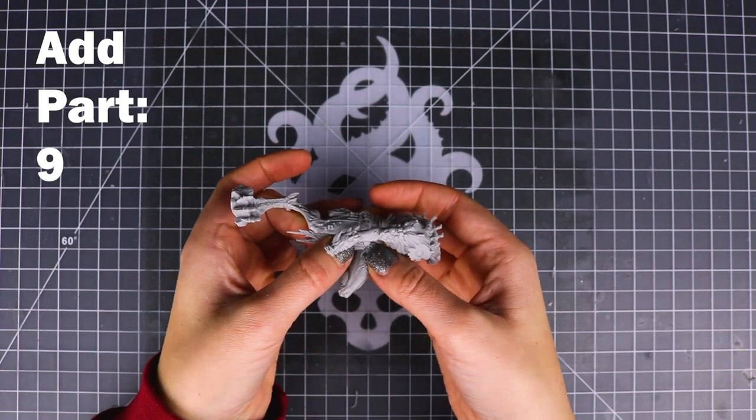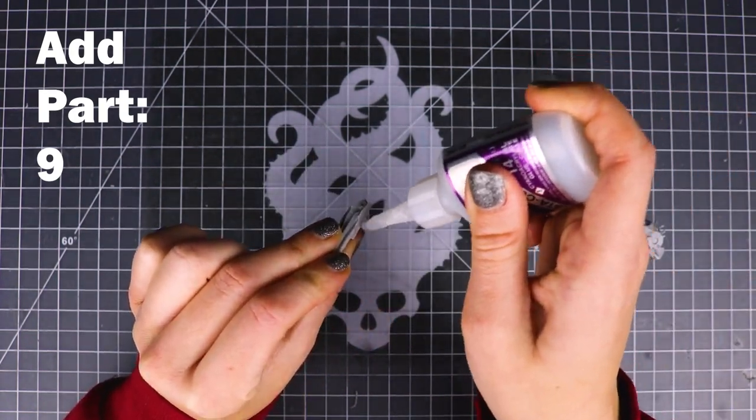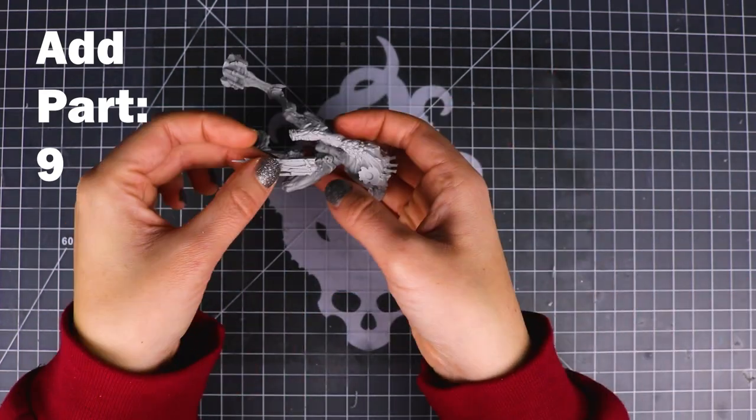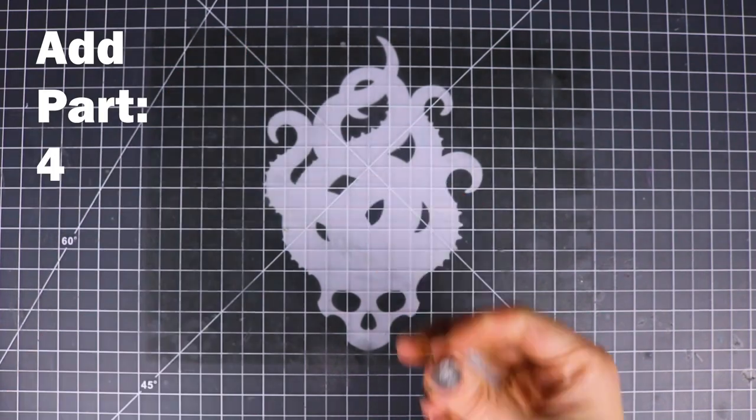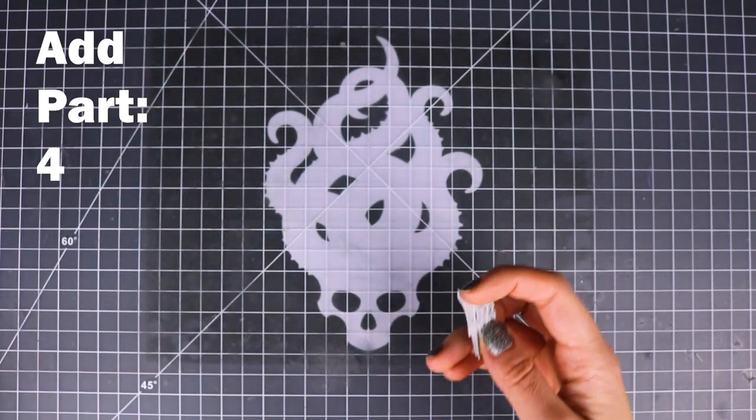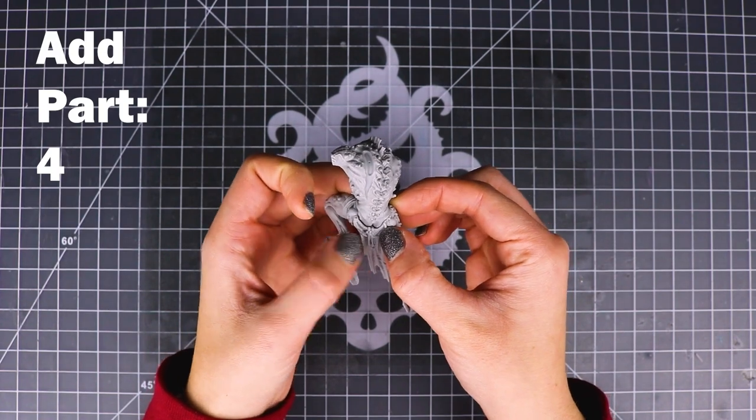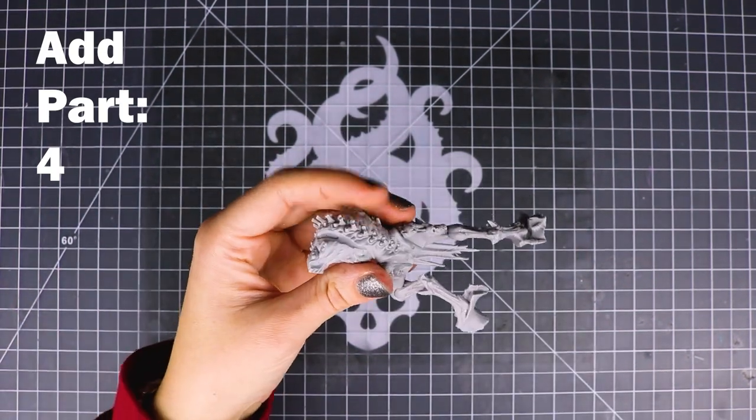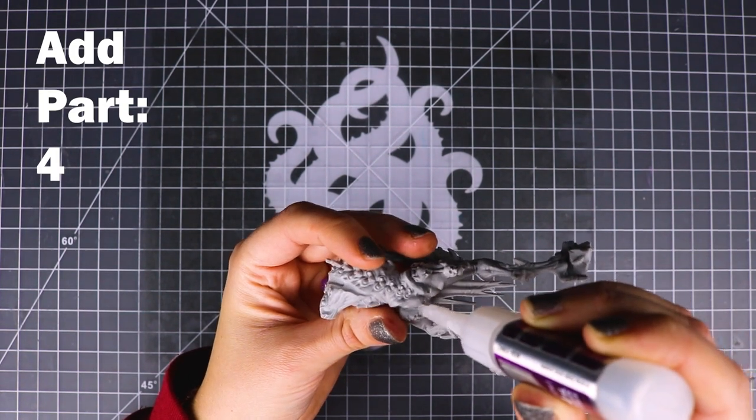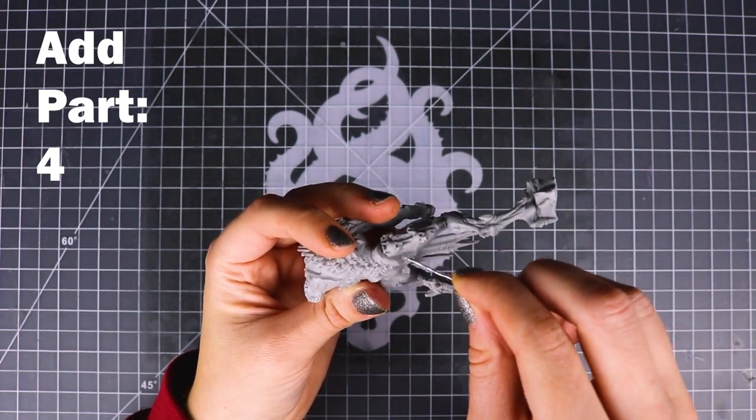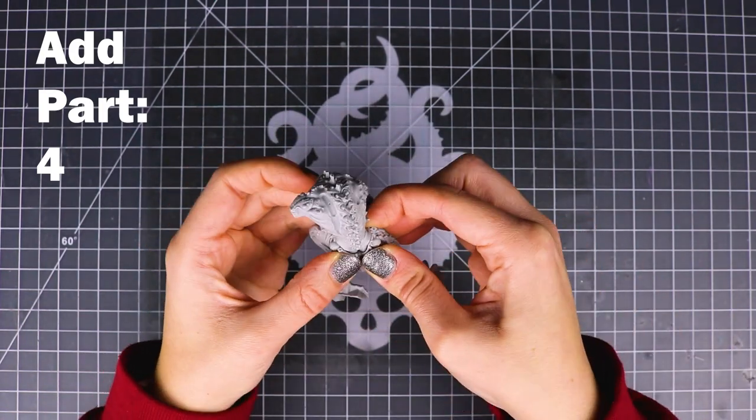And now before we attach it to the base you need to attach these loincloths. It would be hellish to attach them afterwards. Just have to maneuver around all of the base and everything. The back cloth didn't fit as nicely as I wanted it to here. You can see that the top is popping up a bit so I used my hairdryer to bend it before I glued it on here. I just put the hairdryer on it for 30-ish seconds and then slightly bent it until it fit nicely.